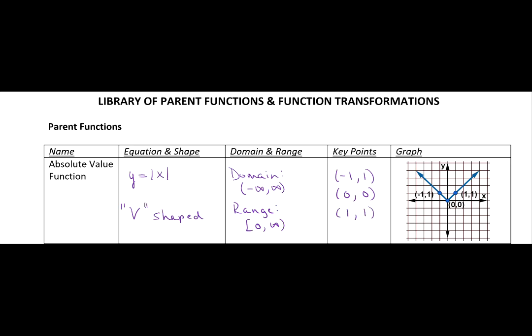So again, if x is one, the absolute value of one is one. The graph here is shown to the right, and there's your v-shaped curve.